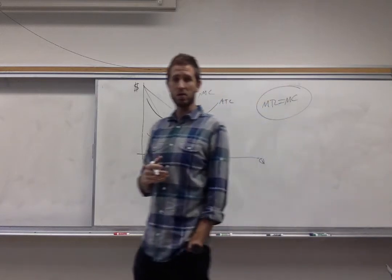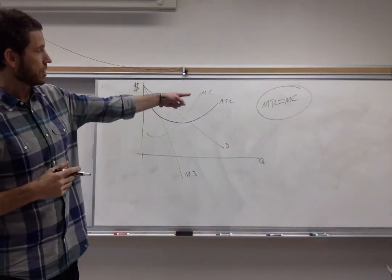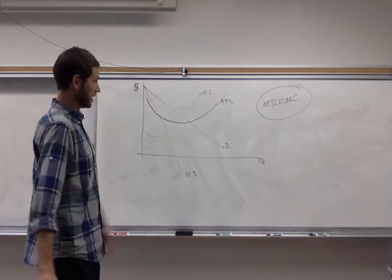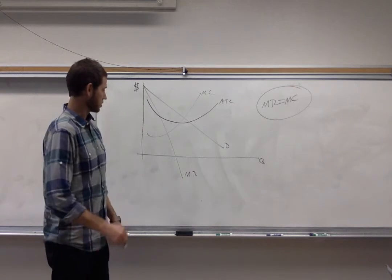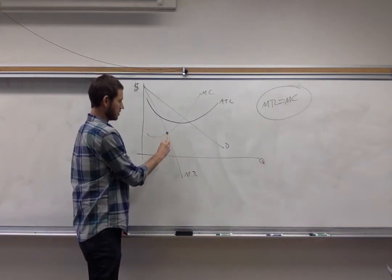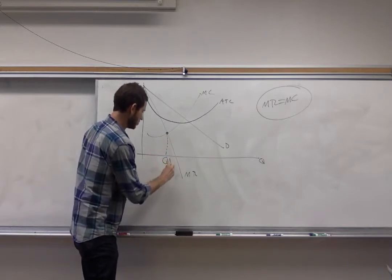So we want to find that particular quantity on our graph. There's only one quantity where that relationship is valid. So looking at the curves that I've got here, of course I want marginal cost and marginal revenue. They come together right at this spot right here. So what that means is that this quantity right over there right underneath that intersection. Let's call that Q star.